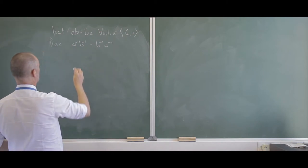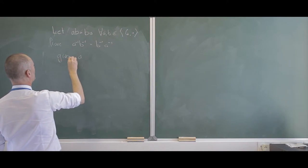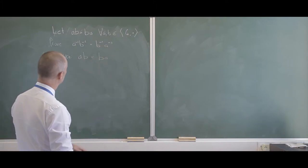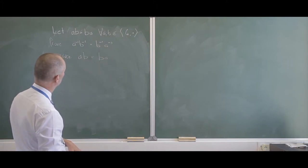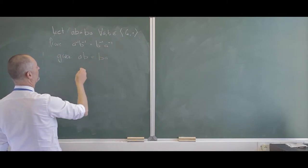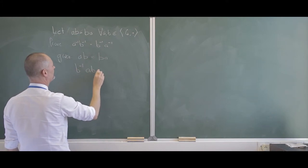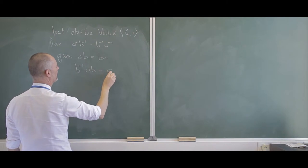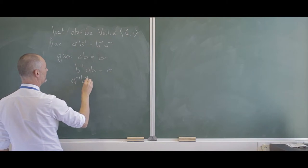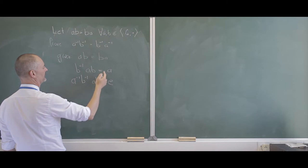The proof for this is actually very easy. We're given that AB equals BA. Let's start bringing things across — I can put a B inverse on that side, so B inverse times AB gives B inverse B, which is E, and I can bring A inverse to this side, so I have A inverse B inverse AB equals E, because I've put an A inverse there.